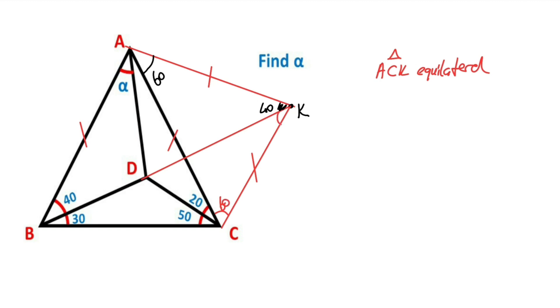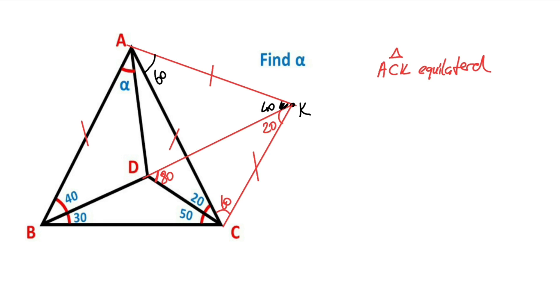Therefore here must be equal 60 degrees and this angle must be equal 20 degrees. And then if you focus on this CKD triangle, this triangle is an isosceles triangle, right.